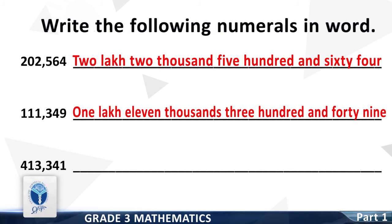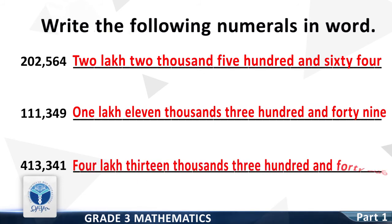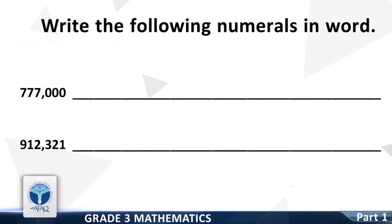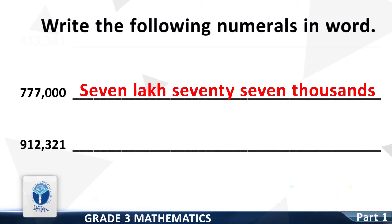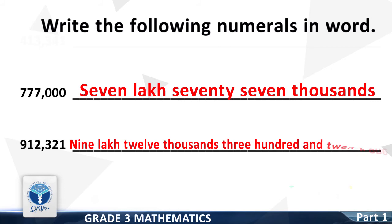Next number is 4,13,341. Good. Next number is 7,77,000. Good. Next number is 9,12,321. Good.